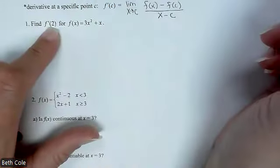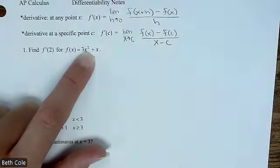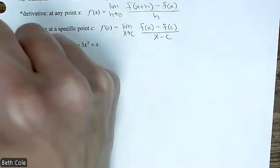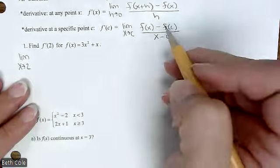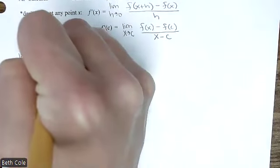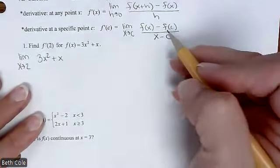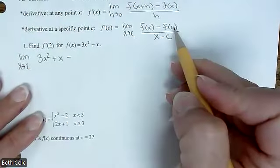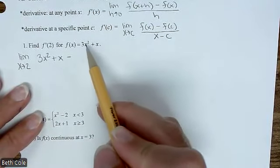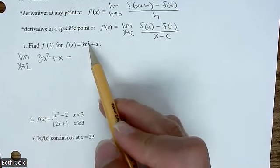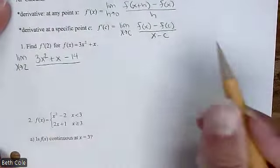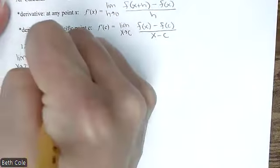So this says find f prime of 2 for this function. Instead of finding the derivative and then separately having to plug in 2, we're going to jump straight to the answer. So it's going to be limit as x goes to 2. We're just going to follow along with this formula — it's the function, so just copy that over: 3x squared plus x, minus whatever you get when you plug in 2. So if you plug in 2 for x: 2 squared, 4 times 3 is 12, 14. Over x minus 2.